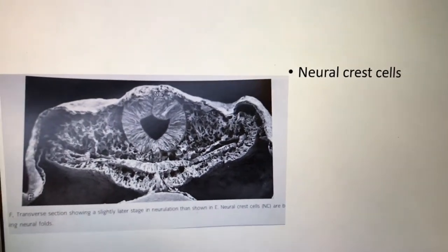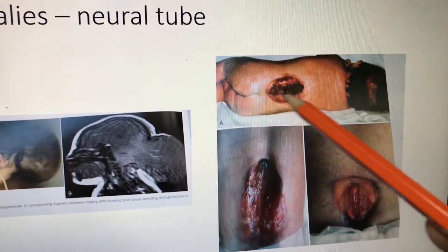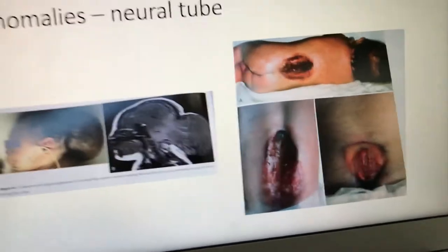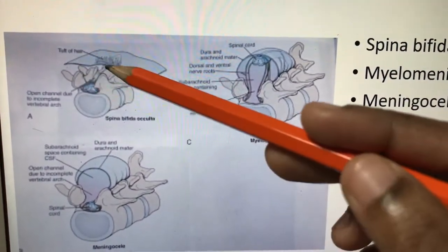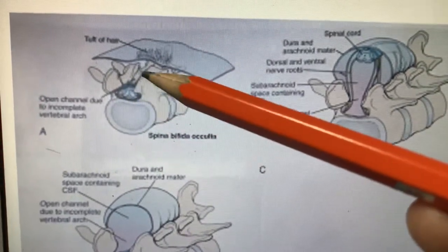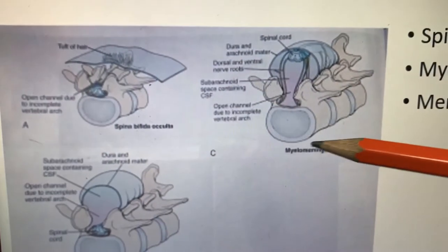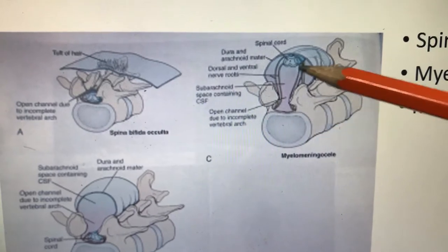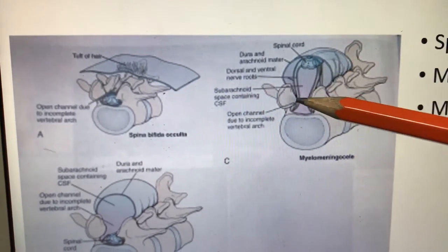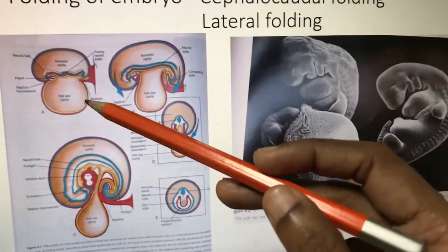Anomalies of the neural tube: if the neural tube doesn't close, you see meningocele and meningomyelocele. Spina bifida: one type is fully fused externally but a tuft of hair is present — indicating something beneath not fully closed. This is called spina bifida occulta — occult means hidden, indicated by a tuft of hair in the lower spinal column. In meningomyelocele, both meninges (dura mater, arachnoid, pia mater) along with spinal cord structures come out; in meningocele only the meninges protrude.